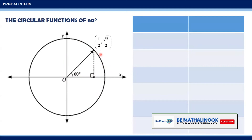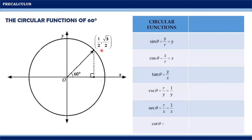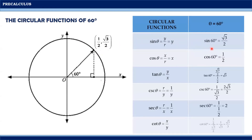With x equal to 1/2 and y equal to √3/2, the circular functions of 60 degrees are: sine 60° = √3/2; cosine 60° = 1/2; tangent 60° = (√3/2)/(1/2) = √3; cosecant 60° = 1/(√3/2) = 2√3/3; secant 60° = 1/(1/2) = 2; and cotangent 60° = (1/2)/(√3/2) = 1/√3 = √3/3 by rationalization.